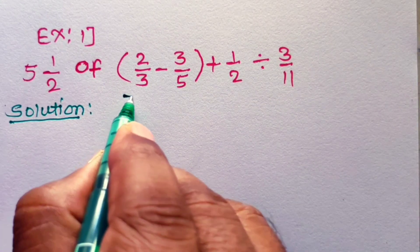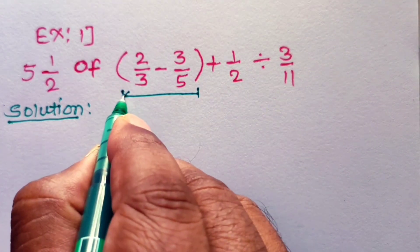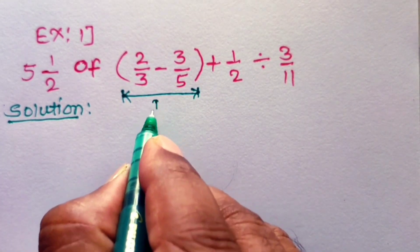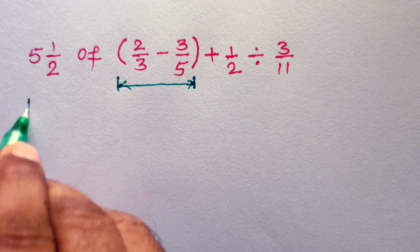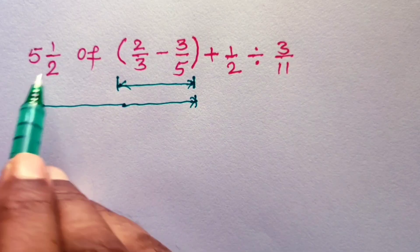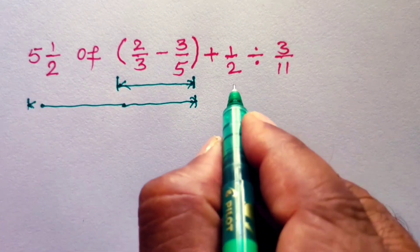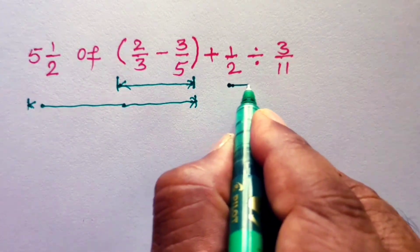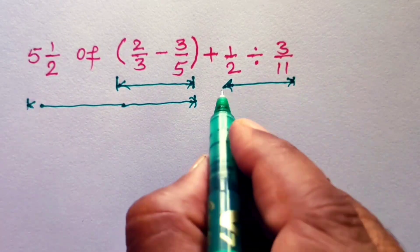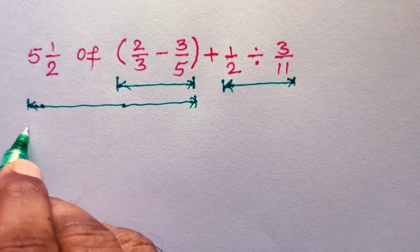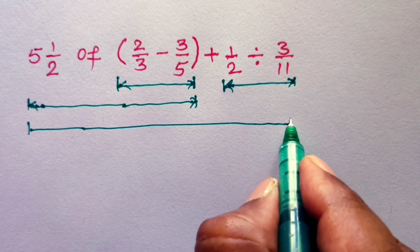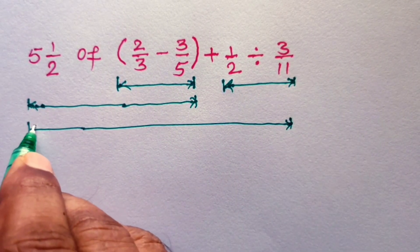We have to find out value of this bracket. This is step number 1. Then step number 2, this of this. Then step number 3, 1/2 divided by 3/11. And step number 4, this whole mathematical expression.